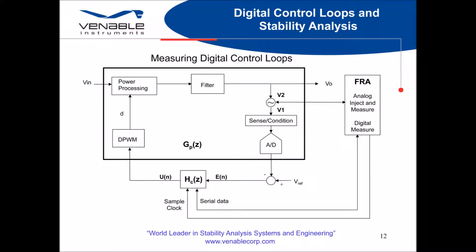We now have four measurement points in the system. The injection and analog measurement points remain the same as they do for an analog-based system and will still be used to plot the total feedback loop. We also now have two digital points, E and U, that will allow us to measure the transfer function of the compensator. Using these four points, we can measure and plot the power stage and compensator separately. Although the A-to-D is now between its own two measurement points, you will generally find that the plot of this piece is quite flat with unity gain and zero phase, because the sampling speed of the A-to-D is normally significantly faster than the switching frequency, and so it can be disregarded in most cases.